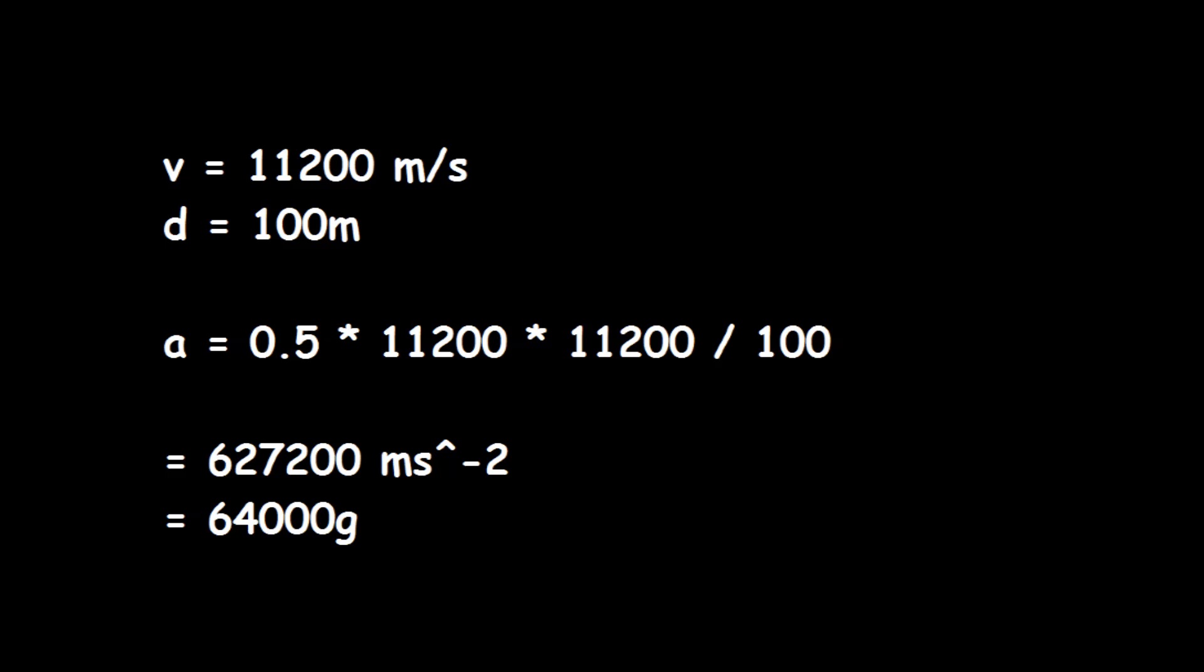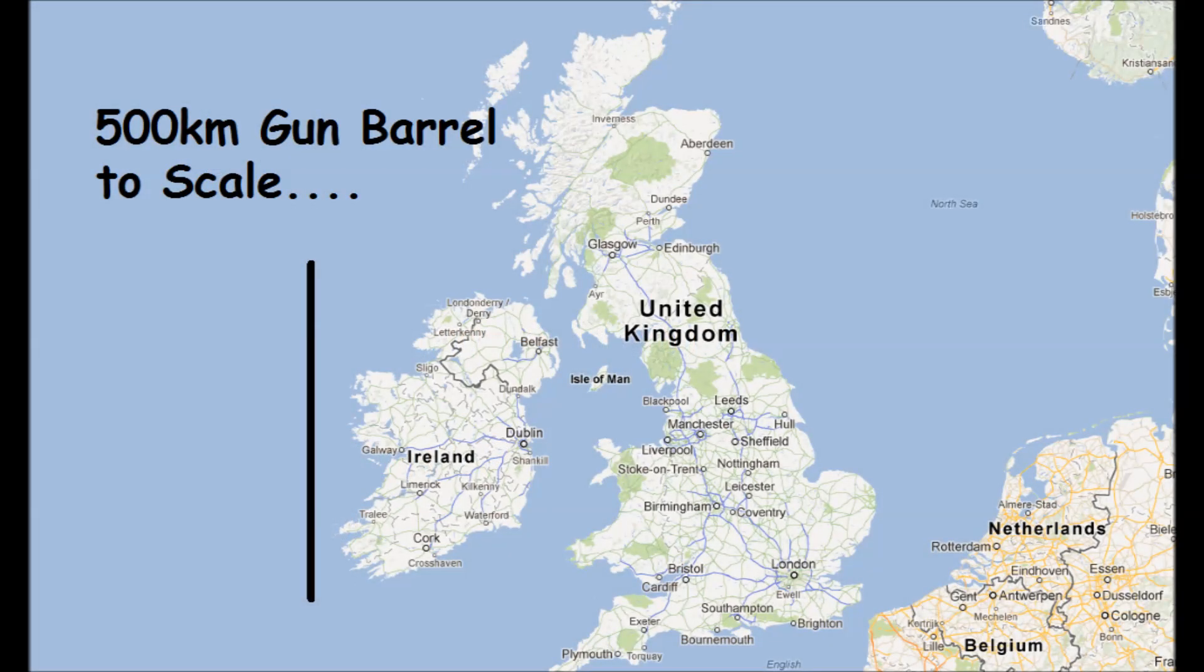Now, the required acceleration value does drop linearly as the barrel gets longer. So, if you were to take that 100 meter barrel and make it a 100 kilometer barrel, you would only require an acceleration of 64 G. Now, that is a lot lower, but it is still going to be fatal to any humans for the amount of time taken to accelerate. Now, if we want to bring the accelerations down to something which would be tolerable to humans, then you're looking at something like a 500 kilometer barrel, which would produce an acceleration of 12.8 Gs, which is tolerable for extended periods for humans lying on their backs.